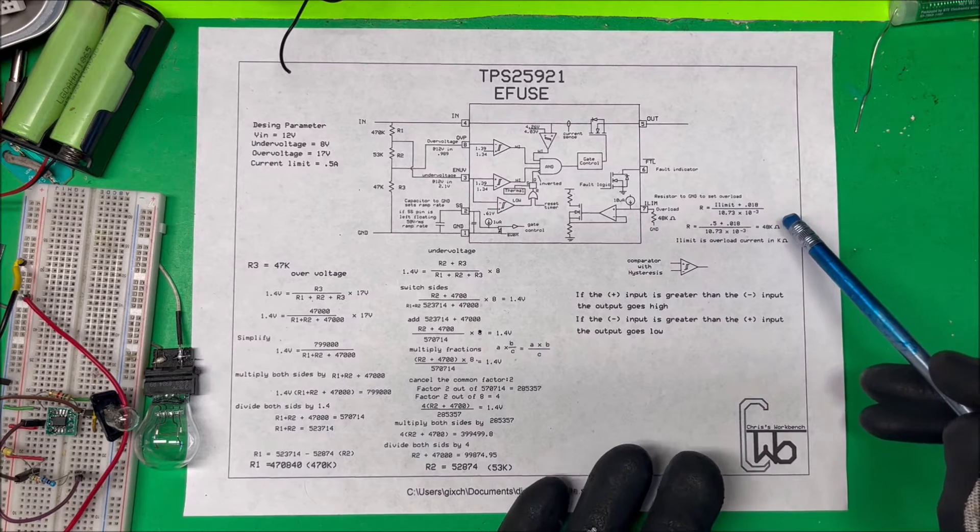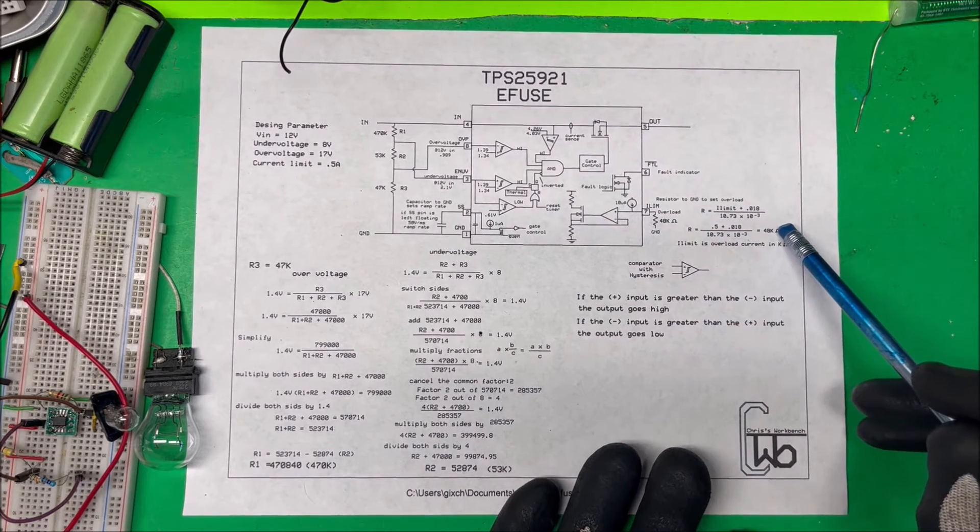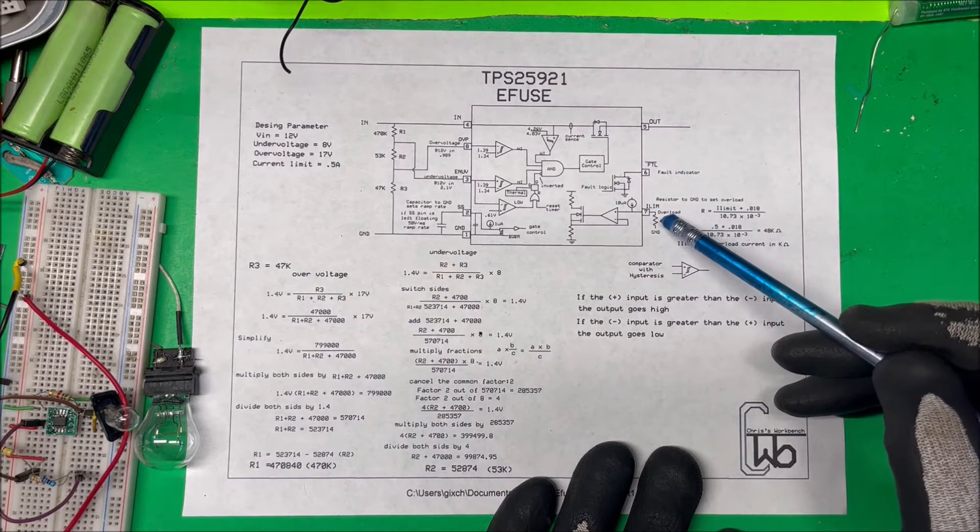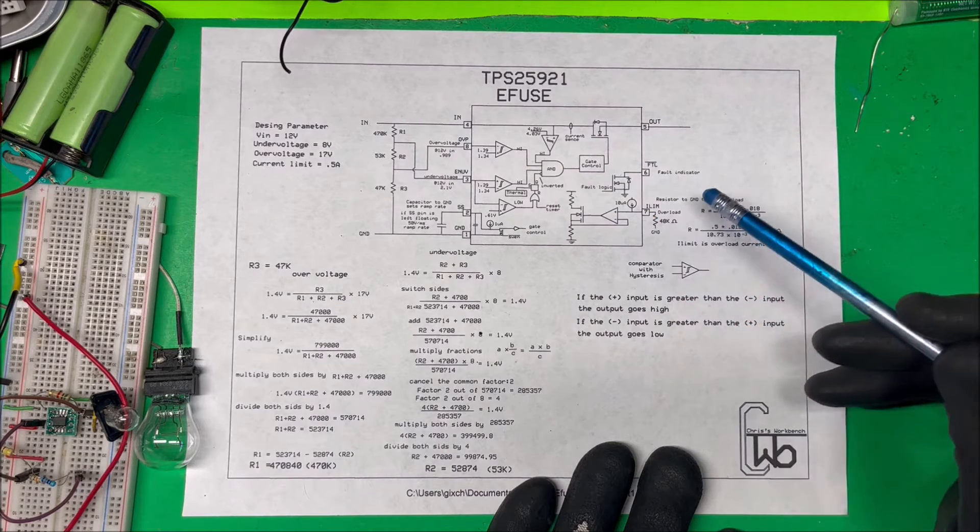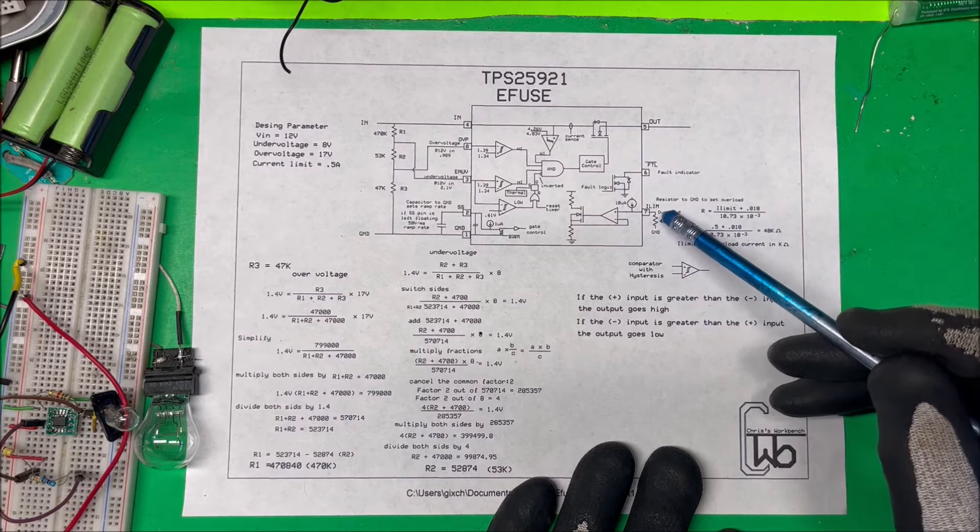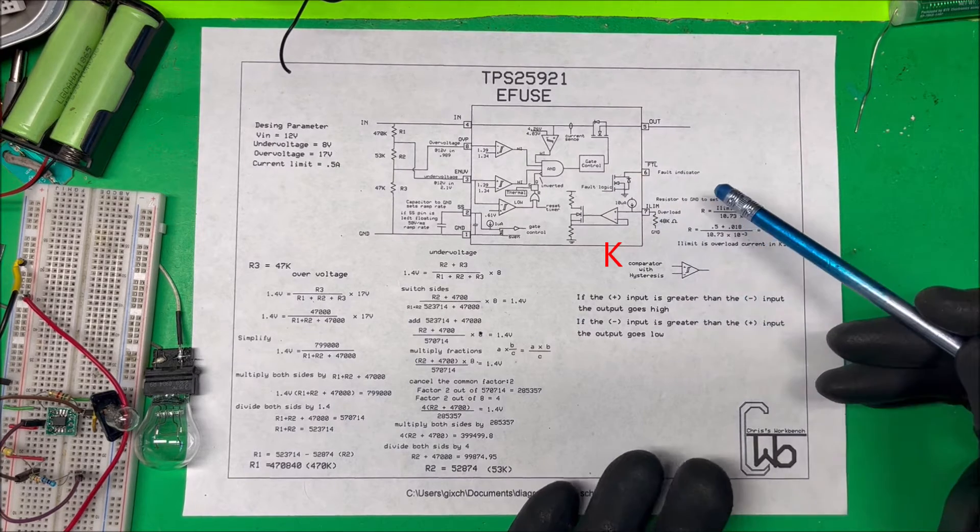If you do that you get 48, but this is all in thousands, so it's going to be 48k. If I put a 48k ohm resistor here, it's going to have a current limit of 0.5 amps. One amp would be about a 98 ohm resistor, but you could calculate that.